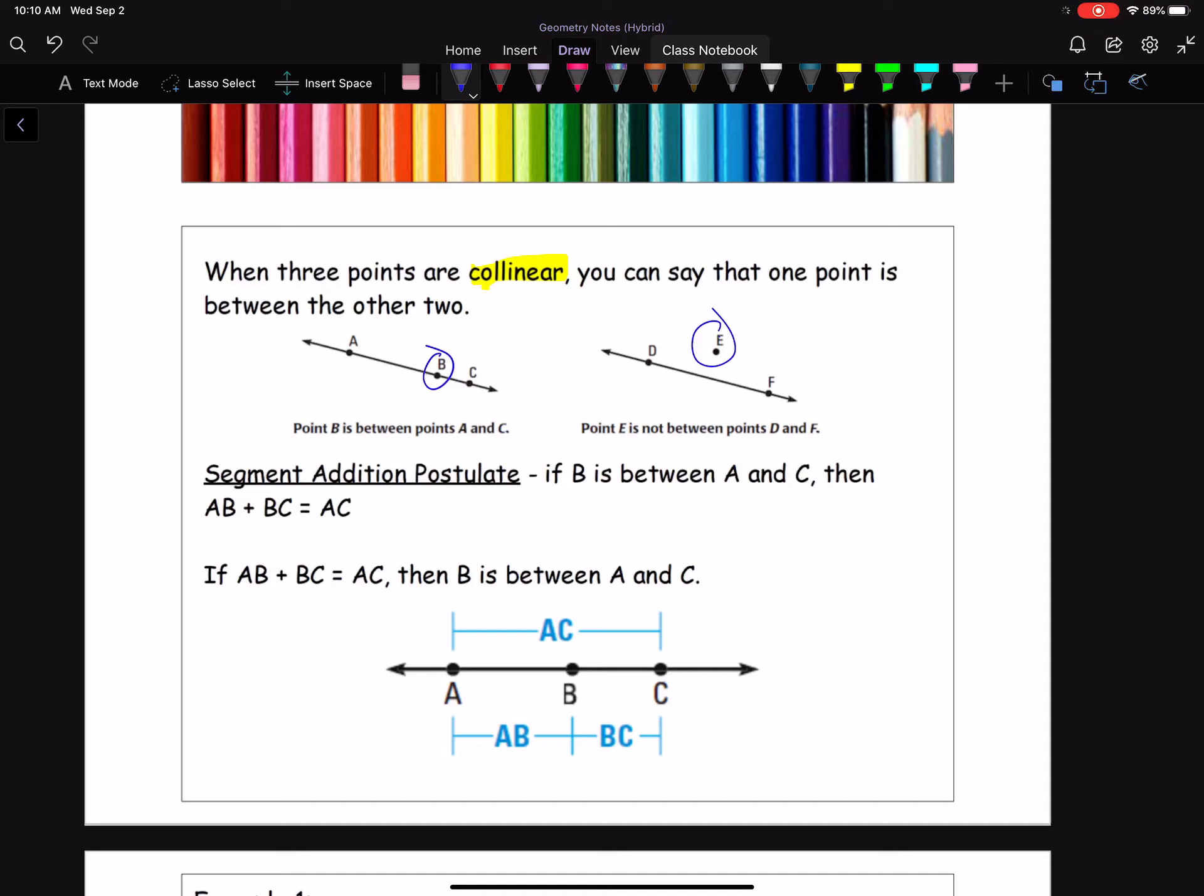So the Segment Addition Postulate says that if B is between A and C, then I could take AB plus BC to get the whole segment. The whole segment AC.